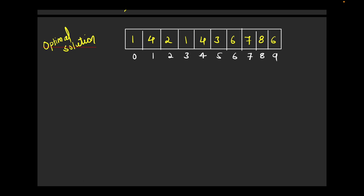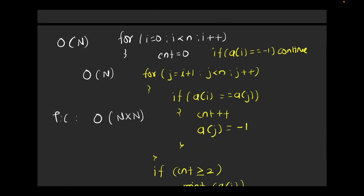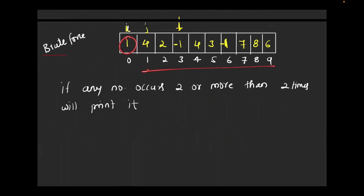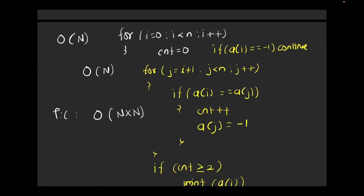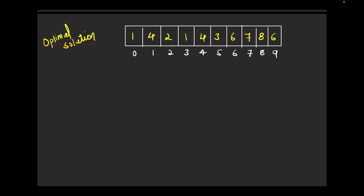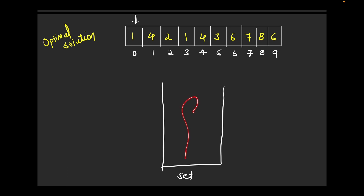The issue with the brute force is that for each element we re-scan the entire array even though we've already checked it. To avoid this redundant work, we will use a Set data structure. I create a set and traverse the array. At element one, I ask the set: is one present? No — so insert one. At four — not present, insert. At two — not present, insert.